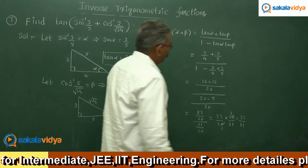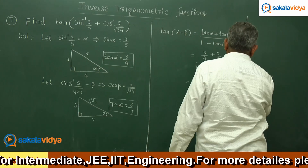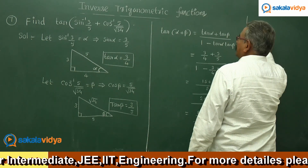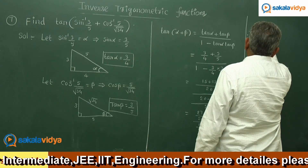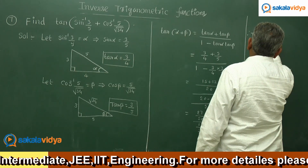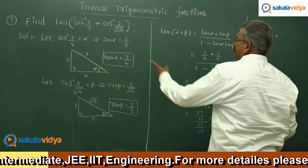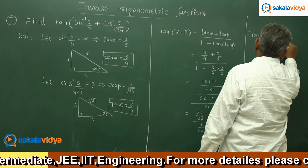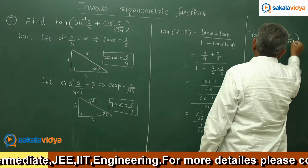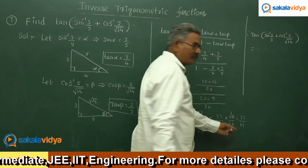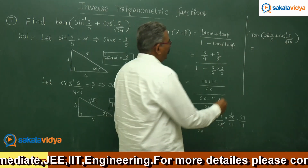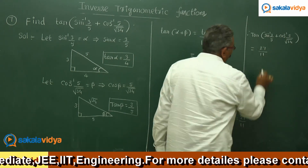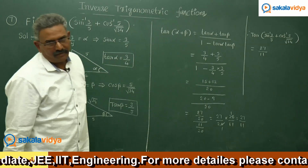Therefore, tan of sin inverse 3 by 5 plus cos inverse 5 by root 34 equals 27 by 11. Hence, the problem has been solved.